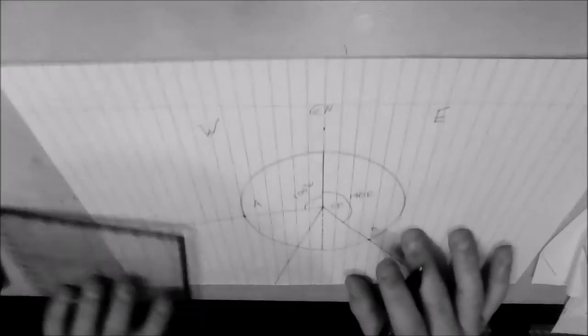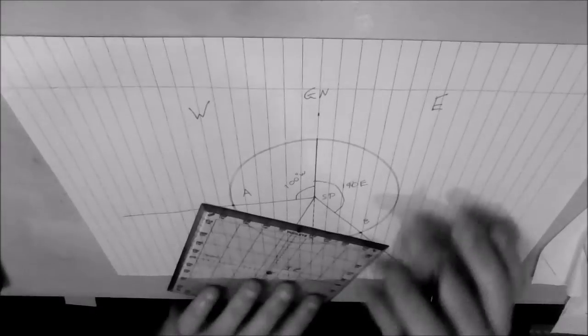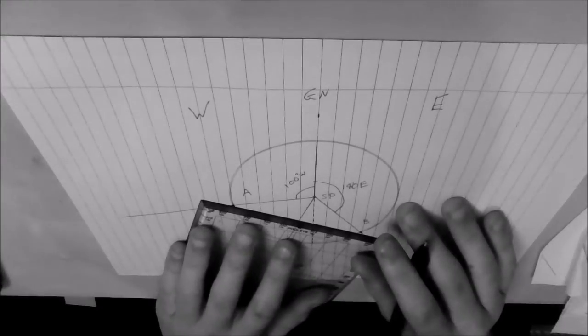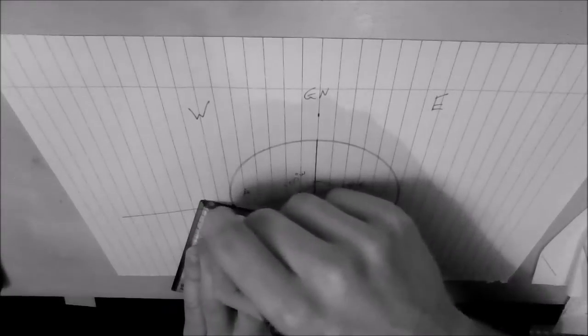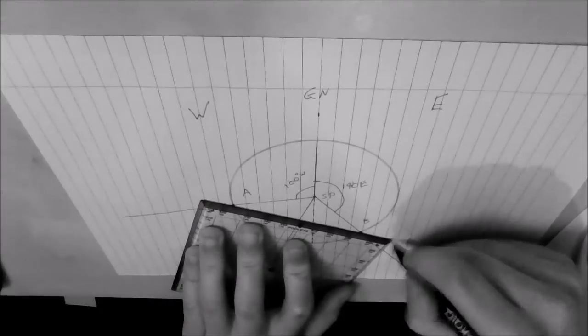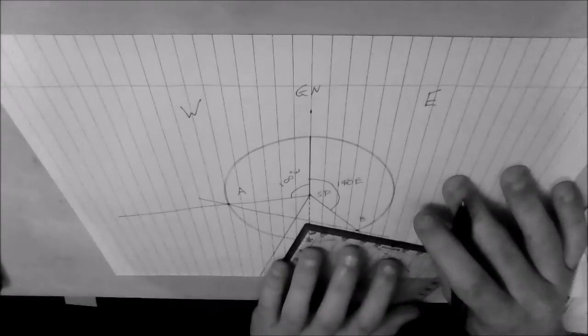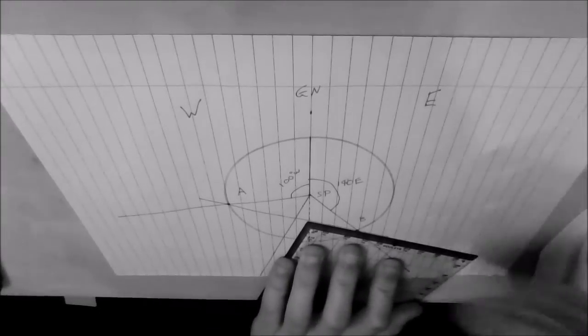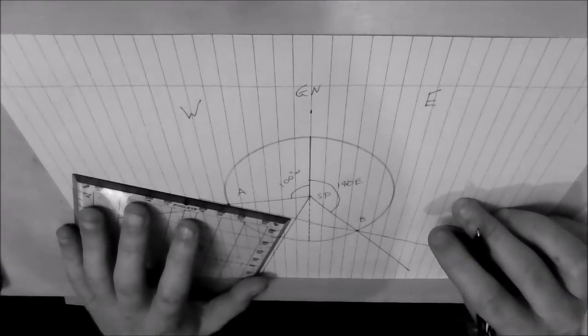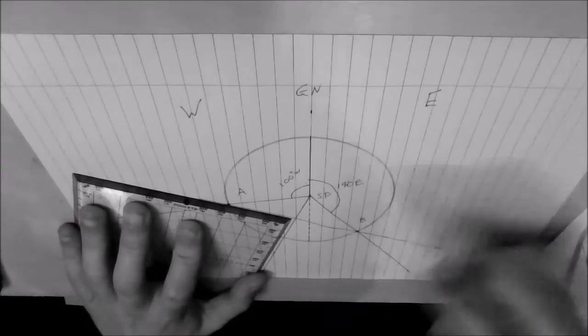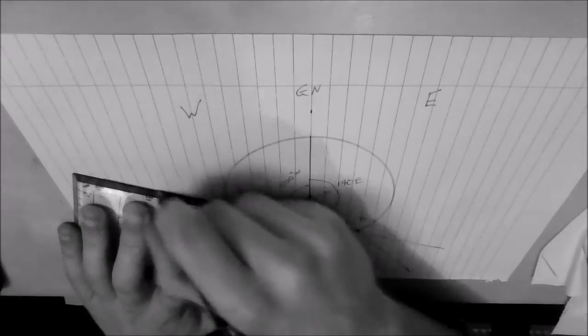OK, what we now want to do is put a straight line either with a ruler or your square protractor through those two points. Like so, maybe extend it out a little bit like that and like that.